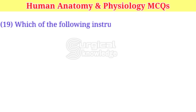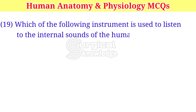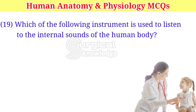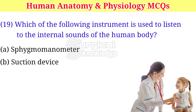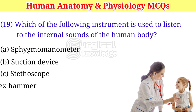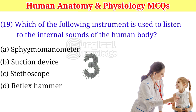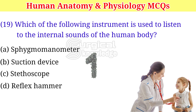Which of the following instruments is used to listen to the internal sounds of the human body? A. Sphygmomanometer. B. Suction device. C. Stethoscope. D. Reflex hammer. Right answer is stethoscope.